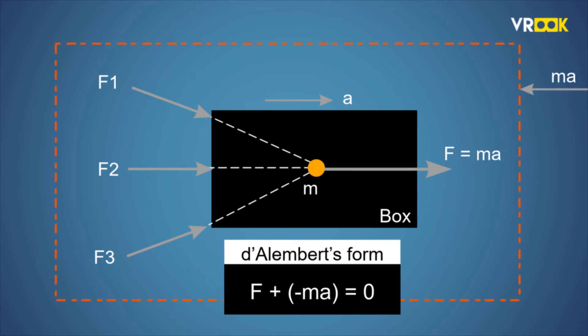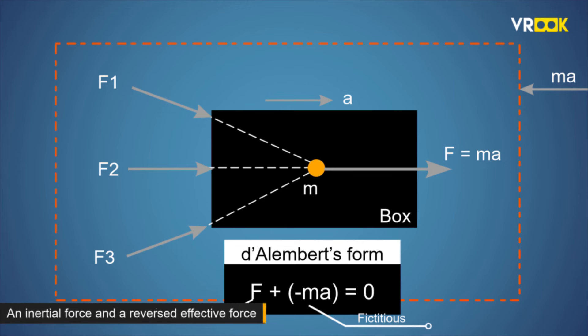In other words, the body is in equilibrium under the action of the real force F and the fictitious force minus ma. The fictitious force is also called the inertial force or a reversed effective force.